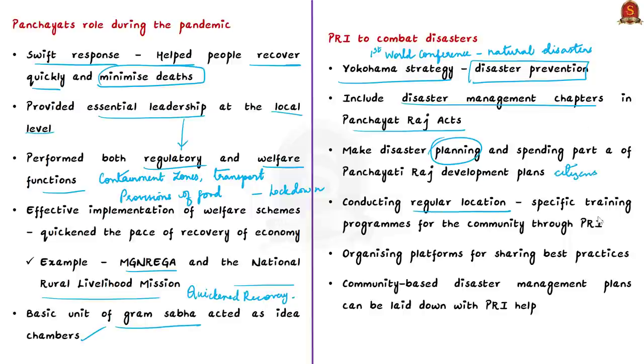In order to make use of these Panchayati Raj institutions effectively when tackling disasters, the first thing that needs to be done is to include disaster management chapters in the Panchayati Raj acts. Along with that, it is equally important to make disaster planning and spending a part of the Panchayati Raj development plans. This will ensure planning of resources is done with citizen in mind.